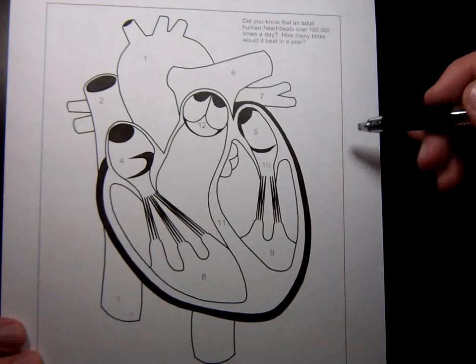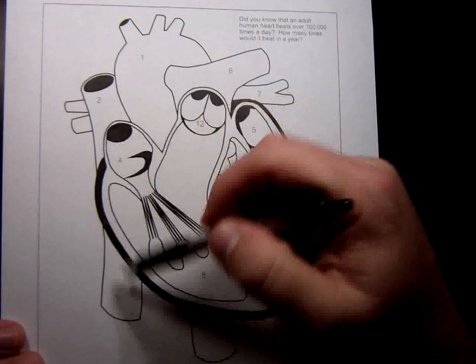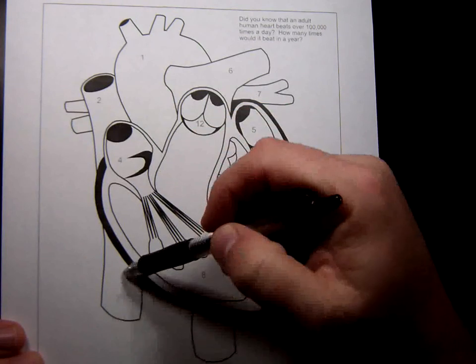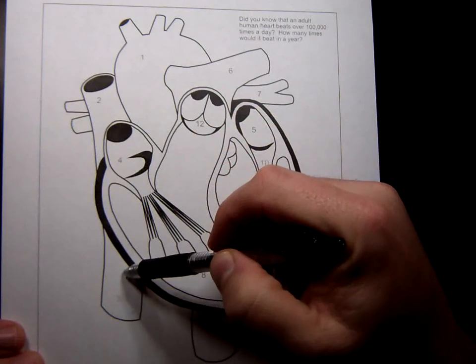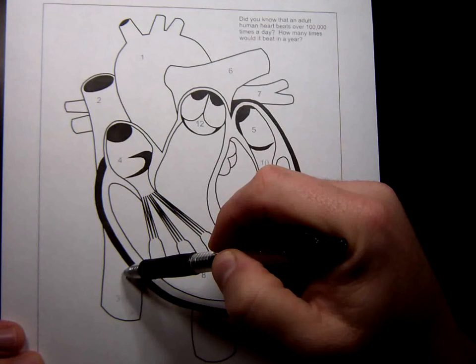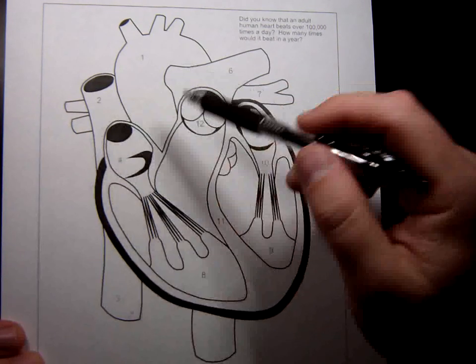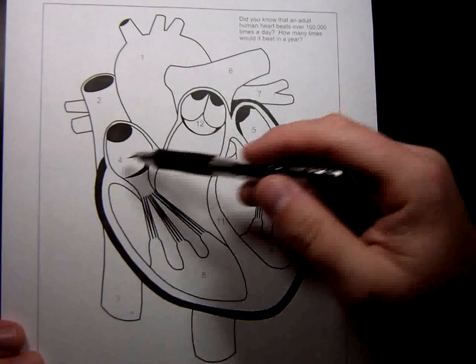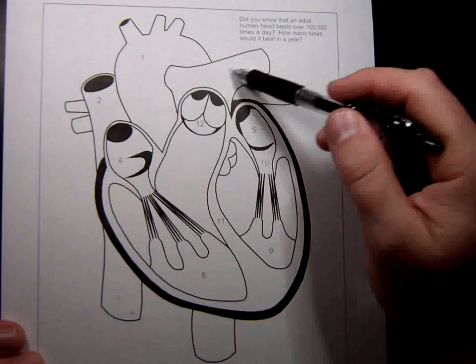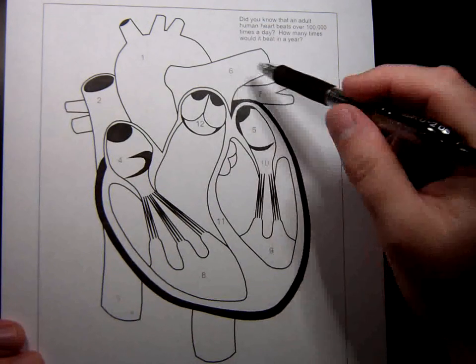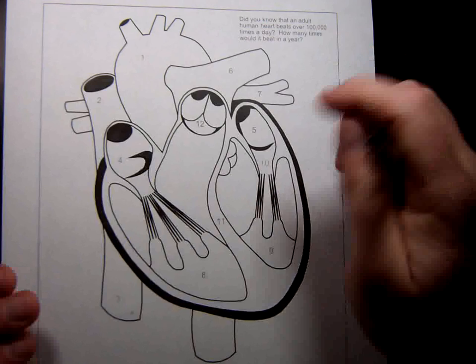Now, four major blood vessels. I'm counting this as one. This is the vena cava. One coming up from the bottom is the inferior vena cava, and the one coming from the top is the superior. And then this one right here is taking blood to the lungs, so it's called the pulmonary artery.